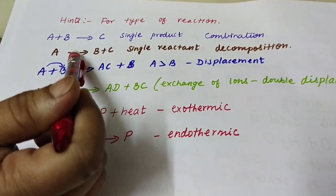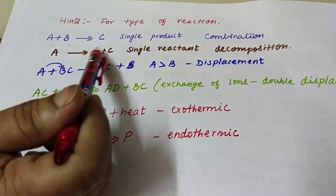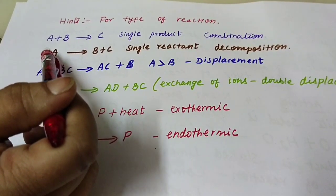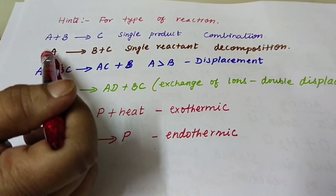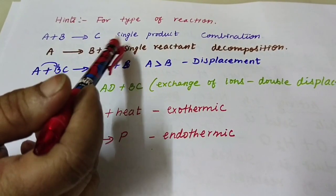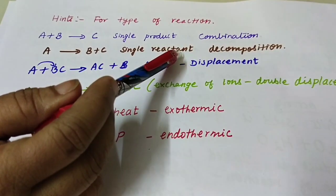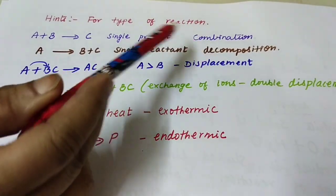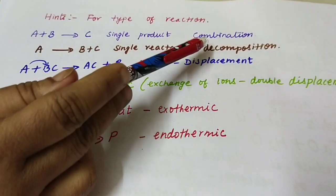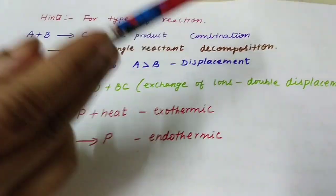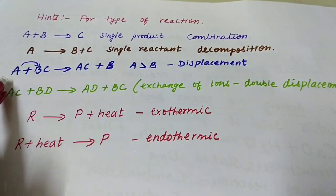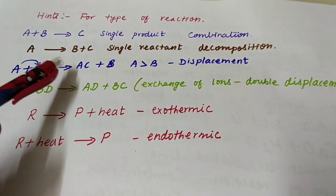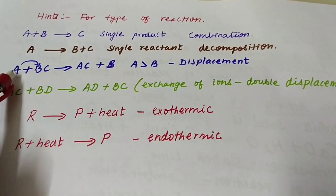If A → B + C, only a single reactant is on the left-hand side. When a single reactant is present, the reaction is a decomposition reaction.